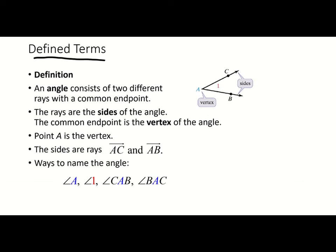Our definition is going to be of an angle. An angle consists of two different rays with a common endpoint. Here we have a picture of an angle — we have ray AC and ray AB. The rays are the sides of the angle, and the common endpoint is always considered the vertex of the angle. That's where the two rays meet.